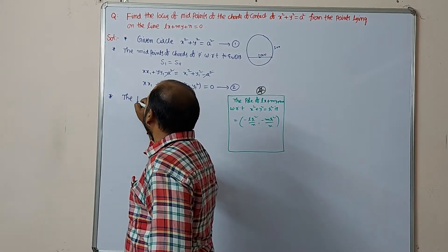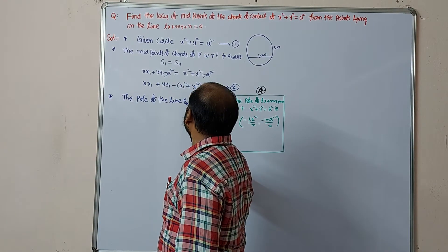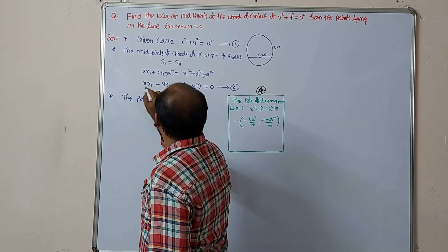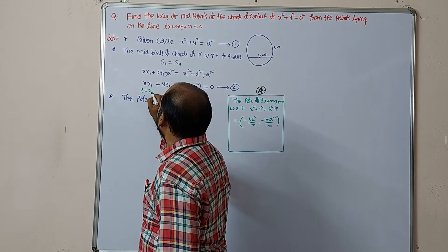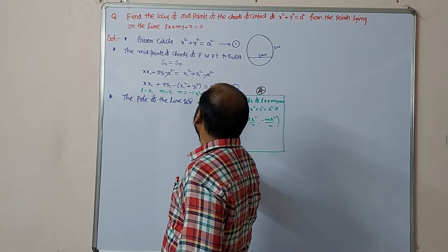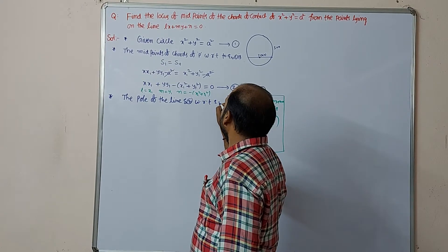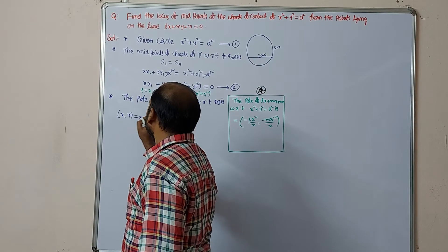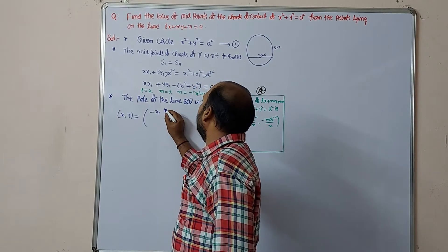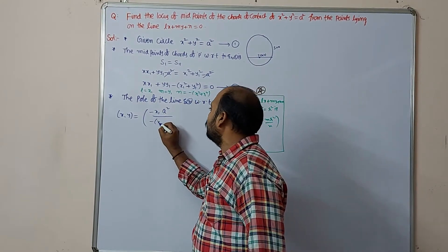The pole of equation two — compare with lx + my + n = 0. Here l = x1, m = y1, and n = −(x1² + y1²). The pole of equation two with respect to equation one is (x, y) = (−l·a²/n, −m·a²/n), where r² = a², l = x1, and n = −(x1² + y1²).